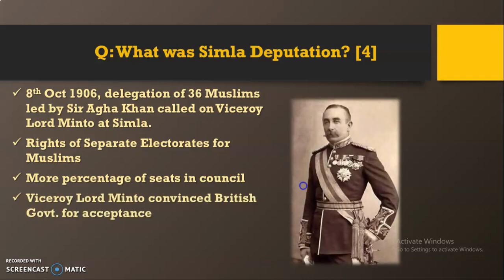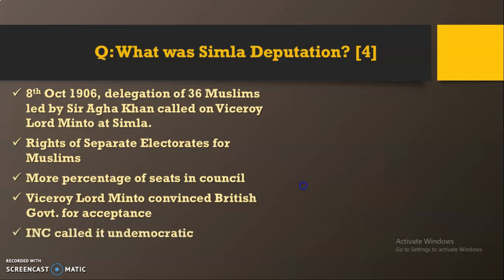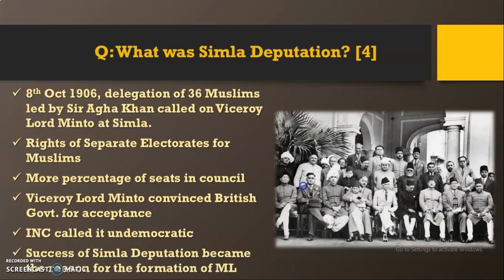Demand number one: rights of separate electorates for Muslims in all local and provincial elections. Muslims must be separately elected by purely Muslim electorates — meaning Muslims would vote for Muslims. Demand number two: more percentage of seats in council. Muslims must be given weightage in all elected bodies, with more seats than their ratio of population warranted, as they were not as developed as Hindus.